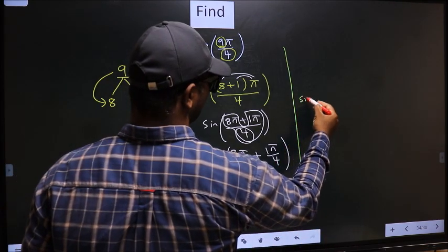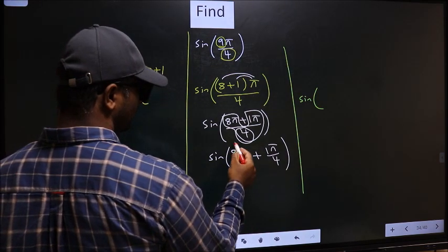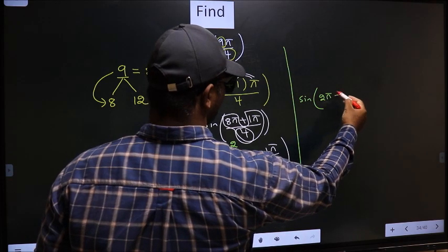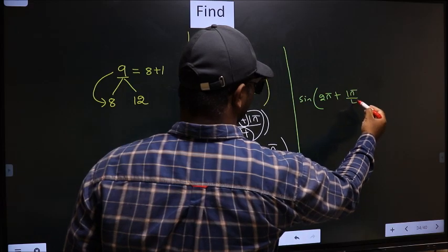Next, sine of—now, here you cancel it. 4 ones, 4 twos. So, we get 2π plus this as it is you write: 1π/4.